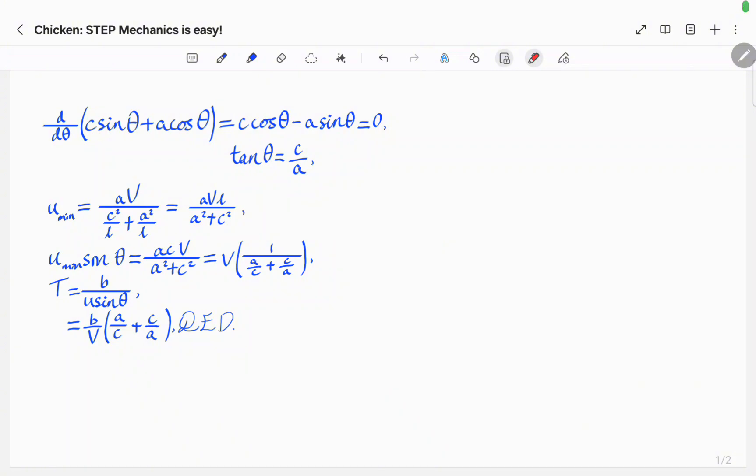We can now move on to the final section of this question. Here we'll find the angle theta at which U is smallest. We'll differentiate the denominator C sine theta plus A cosine theta to get C cosine theta take away A sine theta, and to find when this denominator is greatest we will set the derivative to zero. Rearranging will give us that tangent theta is C over A.